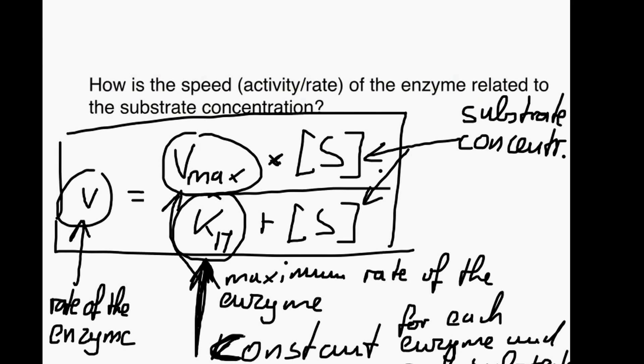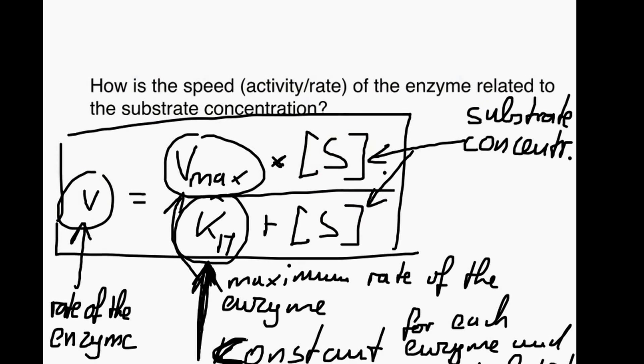Now what we have is a relationship between our rate - the rate by which the substrate is used and the product is made - and the substrate concentration. So that's exactly what Michaelis-Menten wanted to achieve.